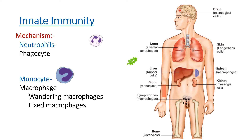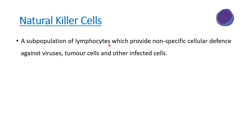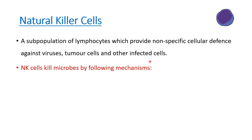That is one of the cellular mechanisms against pathogens. The third cellular mechanism involves natural killer cells. Since a short note on natural killer cells has been asked before, we'll elaborate on how they act. Natural killer cells are a subset population of lymphocytes that provide non-specific cellular defense. While lymphocytes generally refer to B and T lymphocytes concerned with acquired immunity, natural killer cells are a lymphocyte subset that provides non-specific cellular defense especially against viruses, tumor cells, and other infected cells.